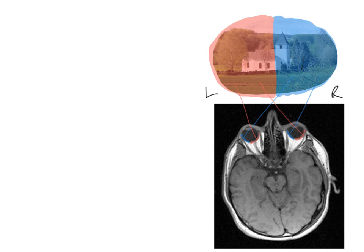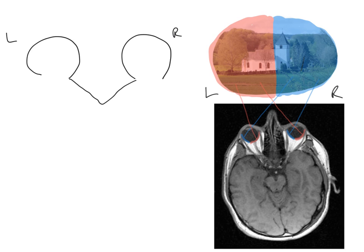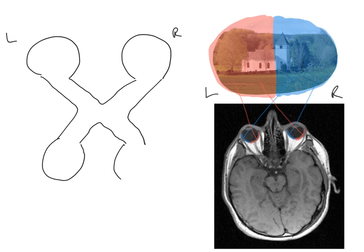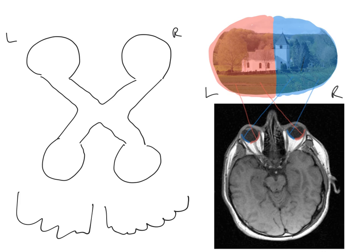Now we're going to draw out the visual pathway. Here is the left eye, here is the right eye, preserving the left-right orientation. Here are the optic nerves crossing over at the chiasm, here are the optic tracts, here are the lateral geniculate nuclei, and here is the visual cortex. We'll put a dotted line to split each retina in half.